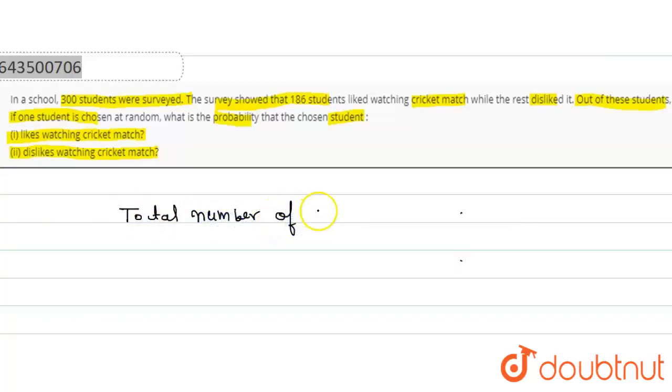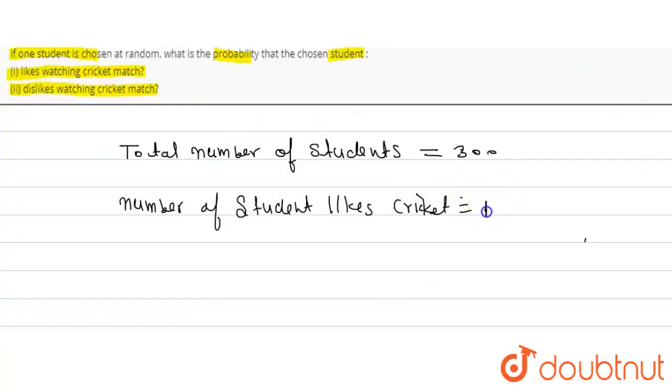So, total number of students equals 300. Number of students who like cricket equals 186. And number of students who dislike cricket equals 300 minus 186, which equals 114.